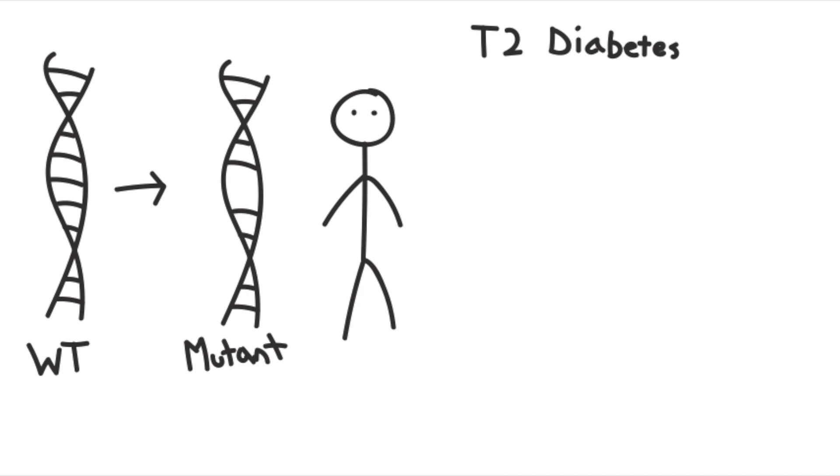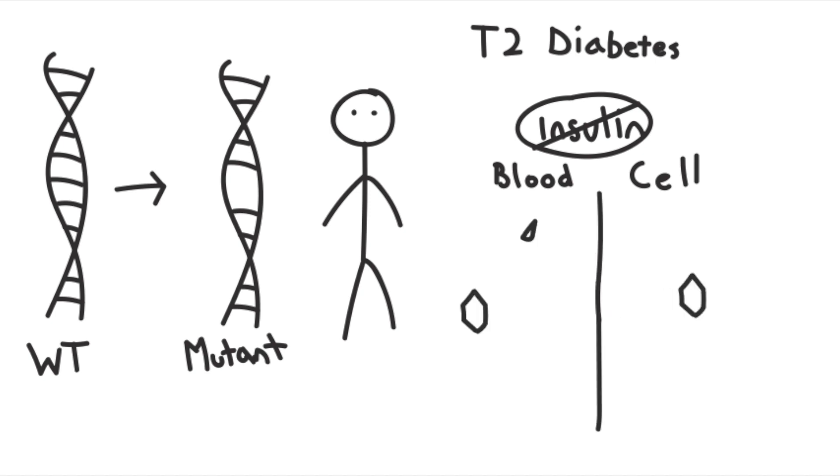Type 2 diabetes occurs when the body becomes immune to its own insulin, at least partially. Insulin is what allows sugar to go from the blood into the cells. Without insulin working properly, blood sugar levels will rise.